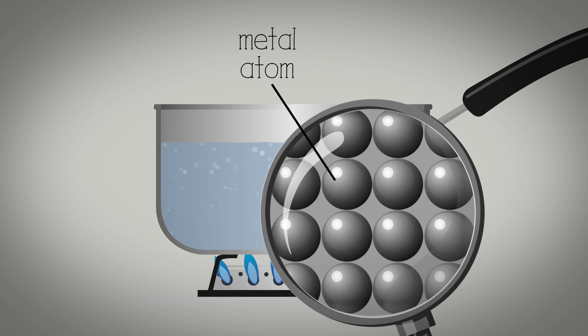This is because of its atomic structure. The atoms that make up metals are tightly packed together in a lattice. As the heat energy from the hob is transferred into the pan, it makes the metal atoms start to vibrate.